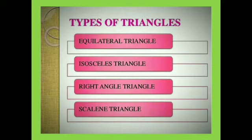There are mainly four types of triangles: equilateral triangle, isosceles triangle, right-angled triangle, and scalene triangle.